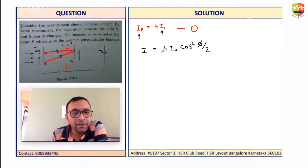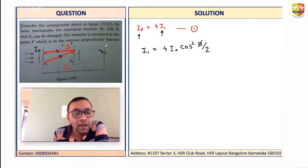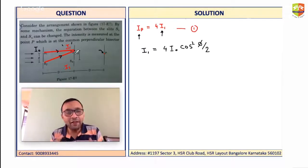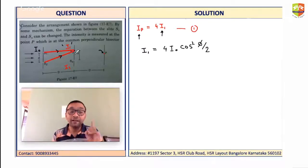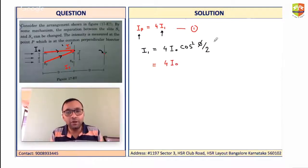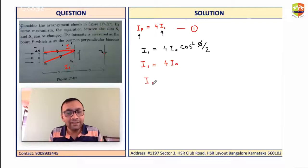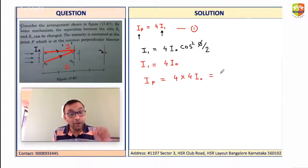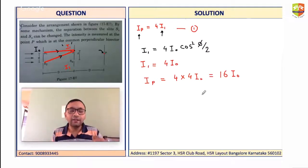The intensity I1 at slit S3 equals 4I₀ cos²(φ/2). By changing z, I can change the phase difference φ. For constructive interference at S3, cos²(φ/2) = 1, so I1 = 4I₀. Then intensity at point P becomes 4 × 4I₀ = 16I₀. So at point P, one can get 16 times the initial intensity I₀. That is how you solve this particular question.